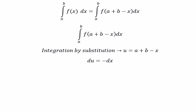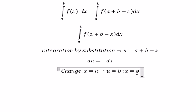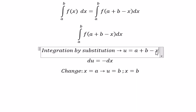Next we need to change the boundaries. If x equals a, we substitute to get u equals b. If x equals b, we substitute into u = a+b-x, so b minus b gives u equals a.